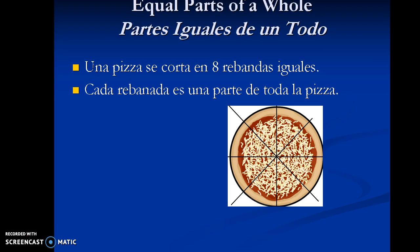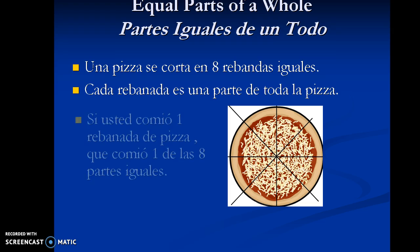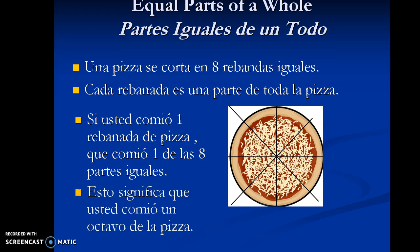A pizza is cut into eight equal slices. Each of these slices is a part of the total pizza. So, if you were to eat one slice of pizza, you would be eating one of the eight total parts. This means that you would have been eating one eighth of the pizza, un octavo de la pizza.